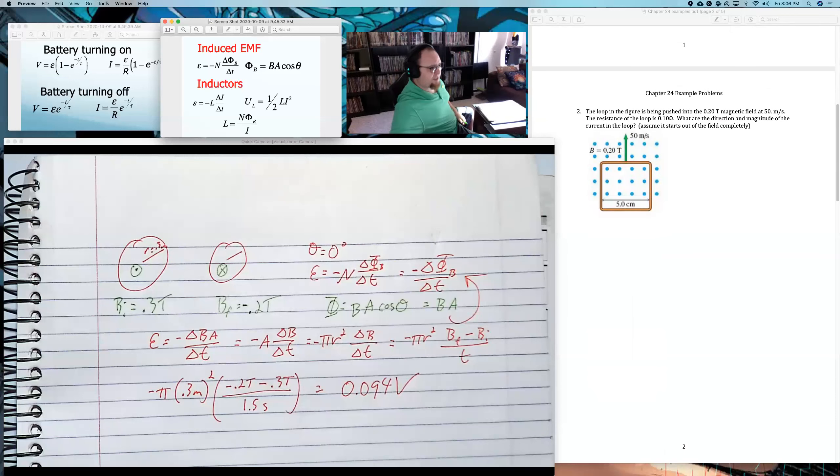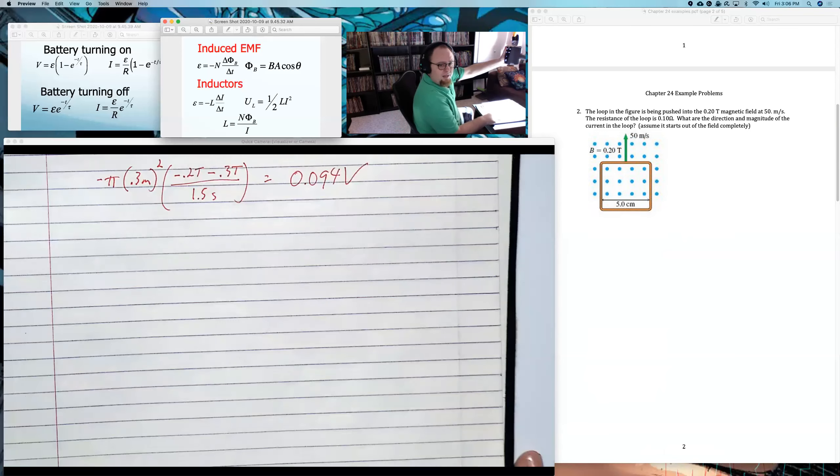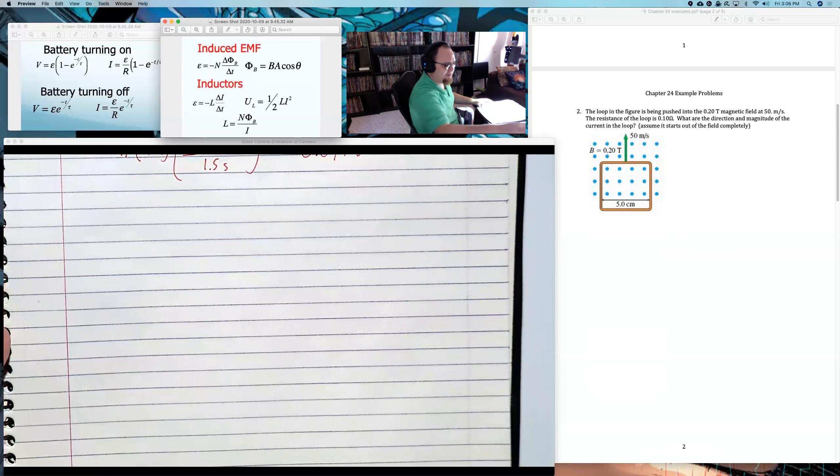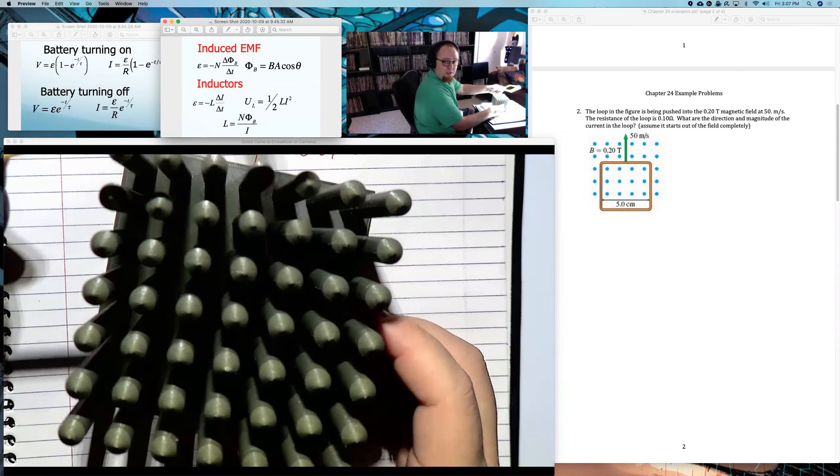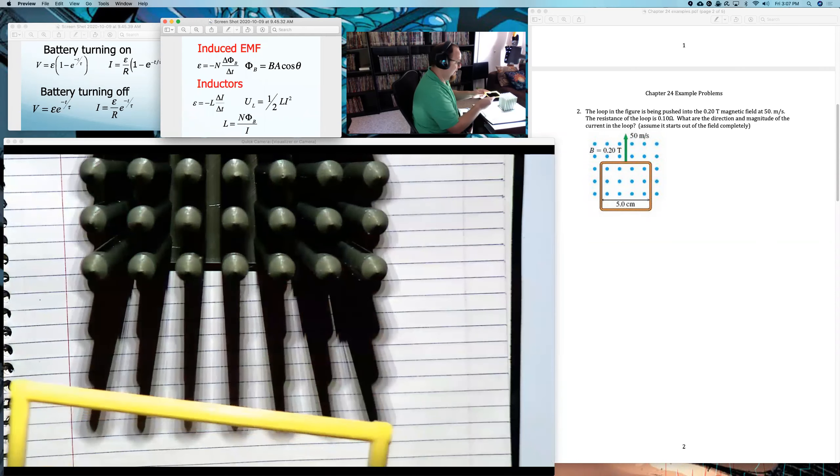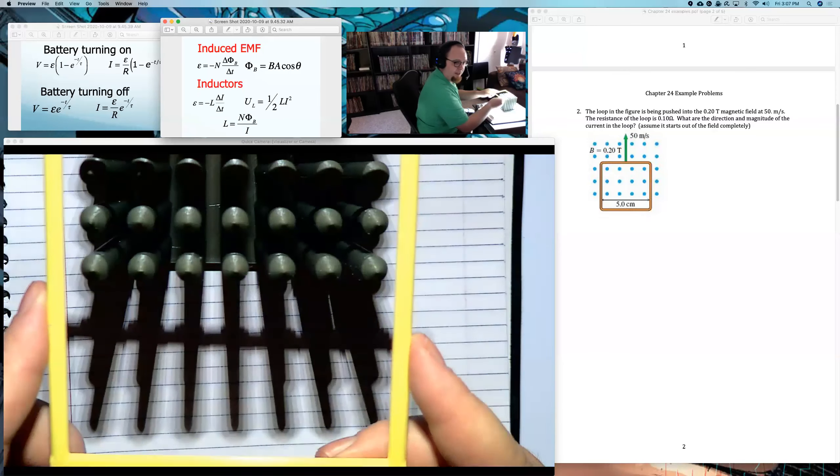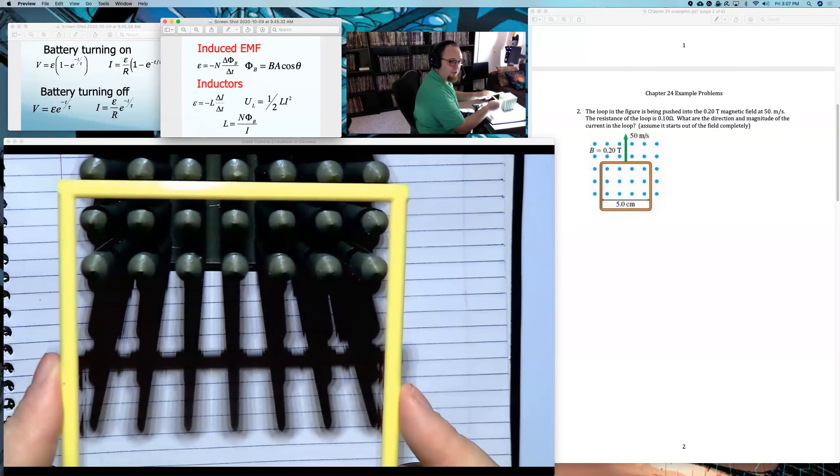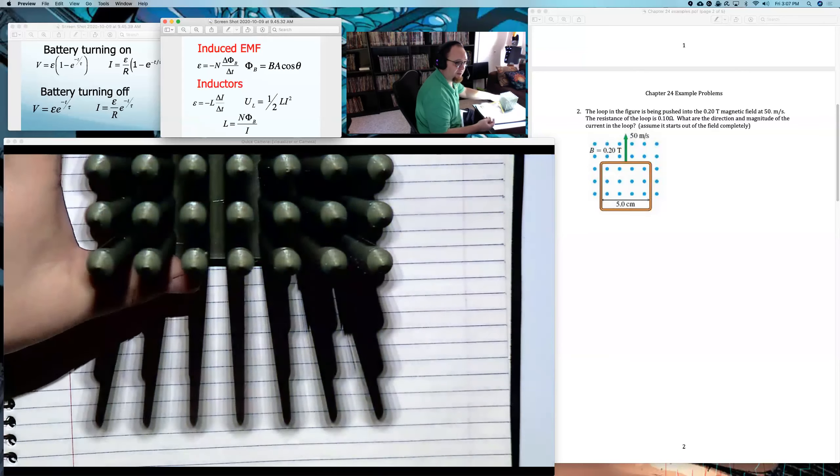The second problem is a little more challenging, and I said something probably more similar to what I'd put in an exam. The loop in the figure is being pushed into a 0.2 Tesla magnetic field at 50 meters per second. The resistance of the loop is 0.1 ohm. What is the direction and magnitude of the current in the loop? Assuming it starts out of the field completely. Okay. Basically, this may be really weird with focus, is this is what I have. I have this magnetic field, and I have this loop just coming and going into it like this. It's going to do weird things with colors. So initially there's no magnetic field in the loop. Then there's some magnetic field. Then a little more. Then a little more. Continuing. Getting more and more magnetic field in the loop. That's what's happening here.